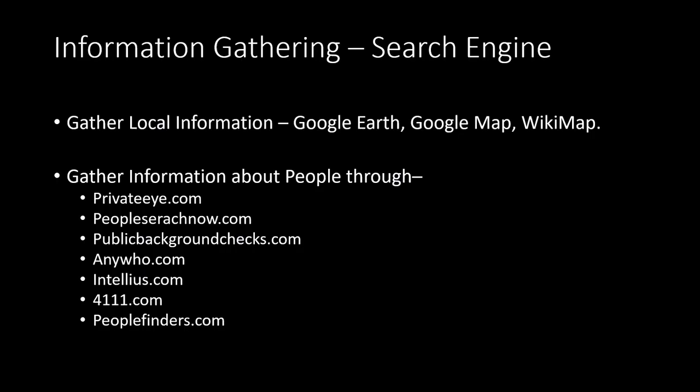In this session we'll understand information gathering through search engines. We had discussed earlier how we can gather information about a public company — its technology from netcraft.com. If you find out the longitude or latitude of a company, you can use Google Earth, Google Maps, Wiki Maps, Bing Maps, or Yahoo Maps to gather details about their headquarters and departments, and where they are situated around the world.